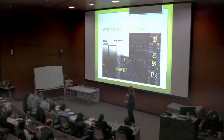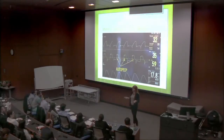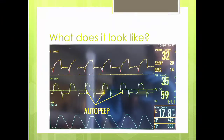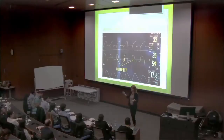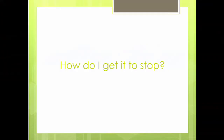This is what it looks like on the actual ventilator so you know how to recognize it. The green line is the flow versus time, and you can see with every breath they're never getting enough out — more air just keeps stacking up and it becomes a vicious cycle.